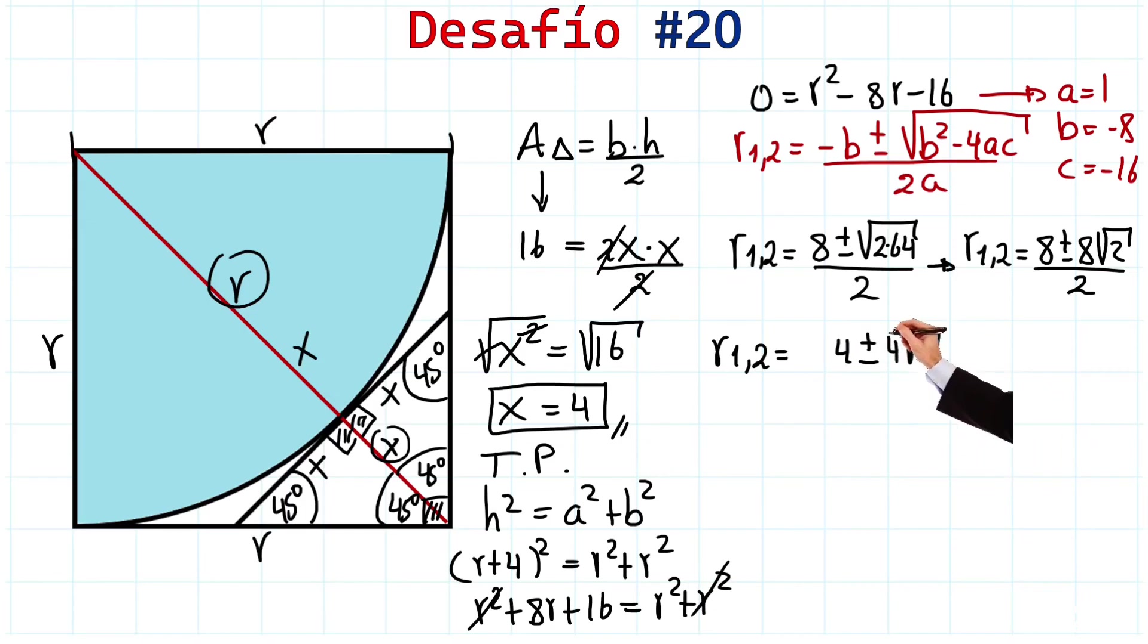since 4 square root of 2 is bigger than 4, if we use the minus, it will be a negative number. So, the minus doesn't work. The solution for this radius, or for this exercise, is that the radius has to be 4 plus 4 square root of 2. Excellent!